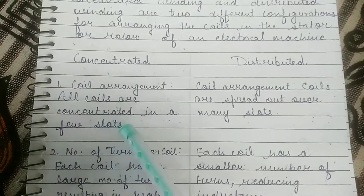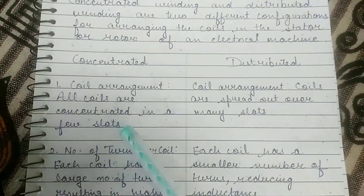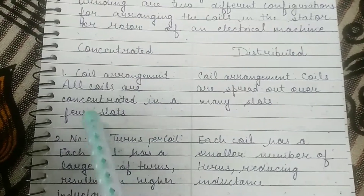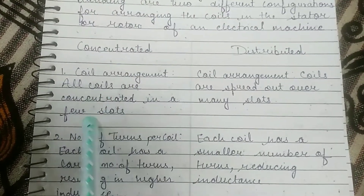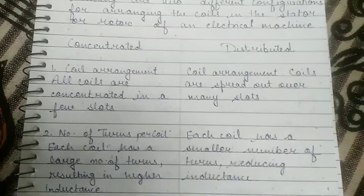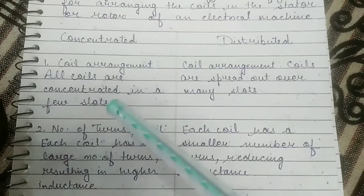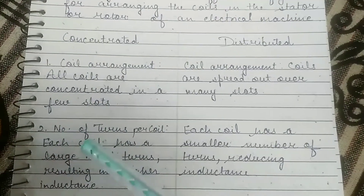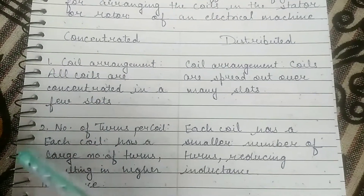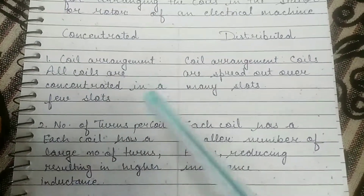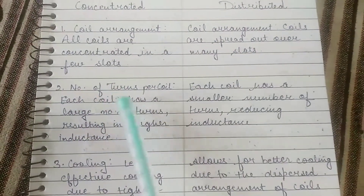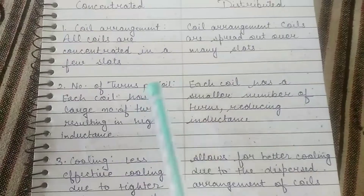A slot is a space or cavity in the stator or rotor of an electrical machine where the winding is placed. Slots are designed to accommodate the winding coils, which generate the magnetic field necessary for the operation of the machine. The second difference is the number of turns per coil.